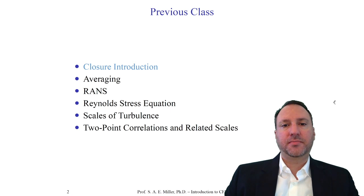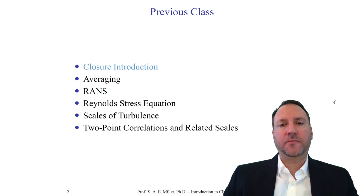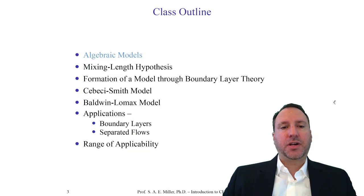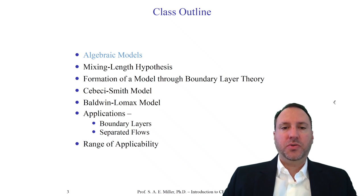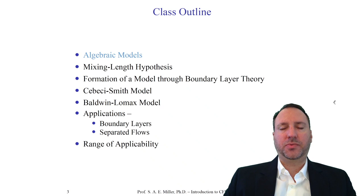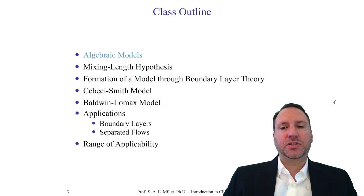Now that we have our equations of motion — the RANS equations — let's try to form those extra terms and equations through physical arguments and mathematics to find a closed set of equations which we can then solve. We're talking about the algebraic models. We'll discuss Prandtl's mixing length hypothesis, model formation for boundary layer flow, the Cebeci-Smith model, the Baldwin-Lomax model, their results for boundary layers and separated flows, and a range of applications.